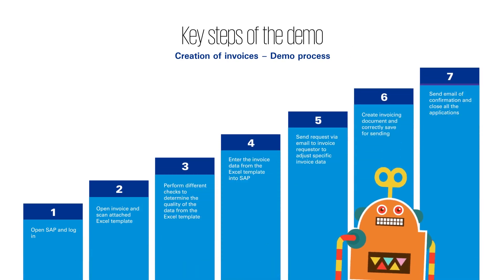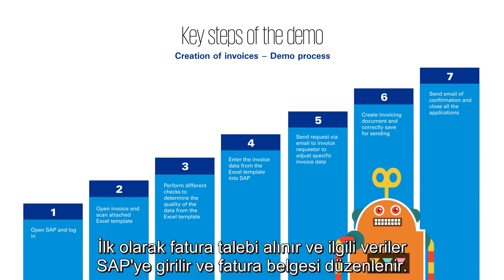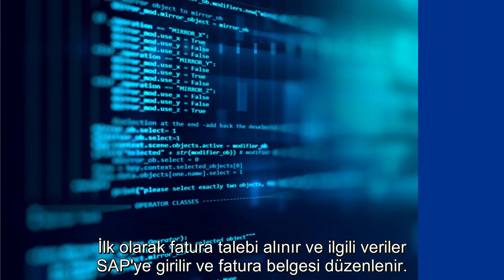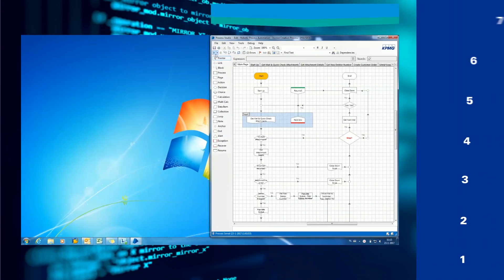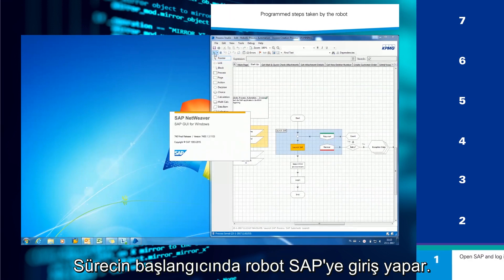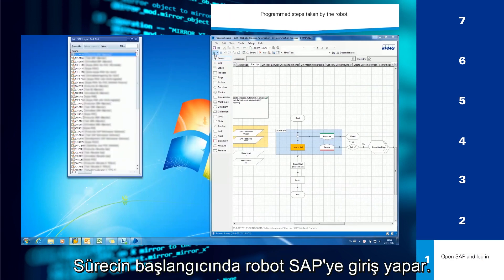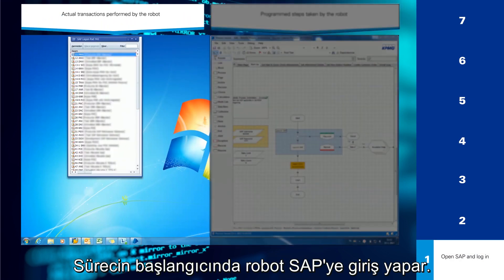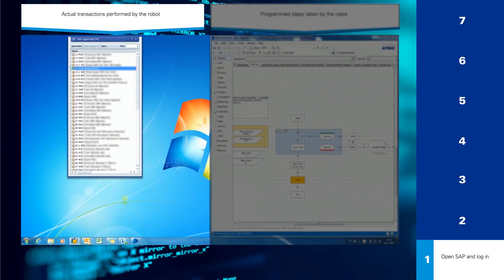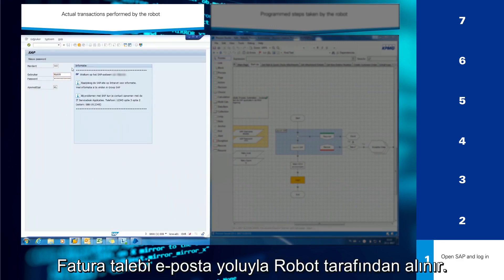The key steps for the creation of invoices are as follows: the invoice request is received and opened, relevant data is entered into SAP, and the invoice document is created. At the beginning of the process, the software robot opens the correct environment in SAP and logs in.